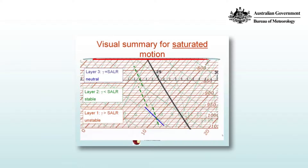In the first layer, you can see that the environment cools more rapidly than the saturated adiabatic — gamma is greater than SALR — and so that's unstable, because if you take a parcel of air that's saturated and lift it, it will be warmer than the environment. In layer 2, the environment cools more slowly than the saturated adiabatic lapse rate, so gamma is less than SALR. Any time you lift a saturated parcel in that layer, it will be cooler than its environment and experience negative buoyancy, so that layer is stable.